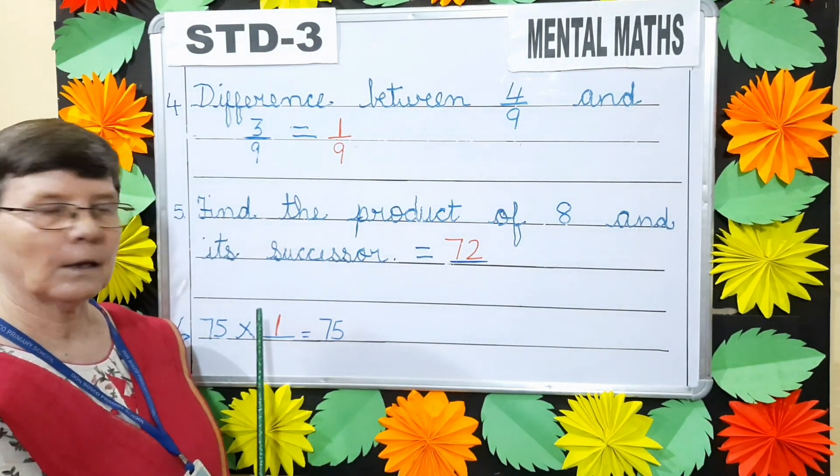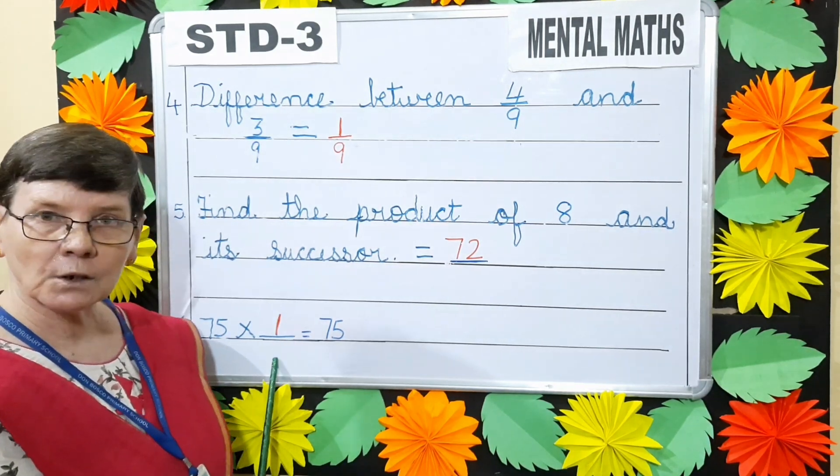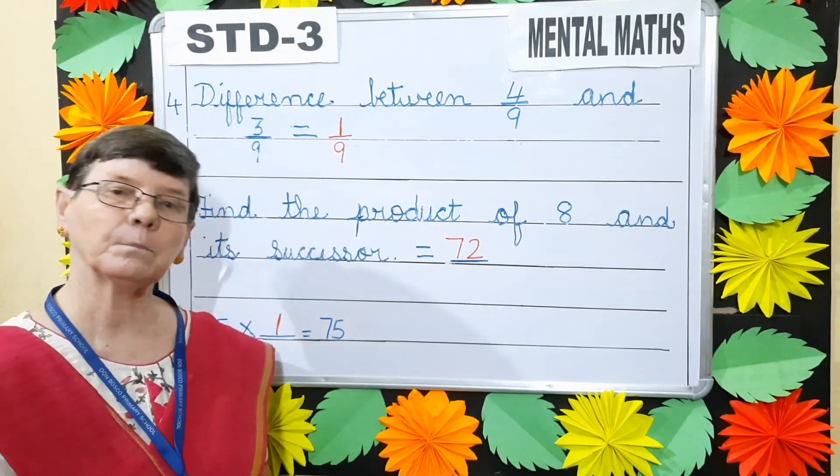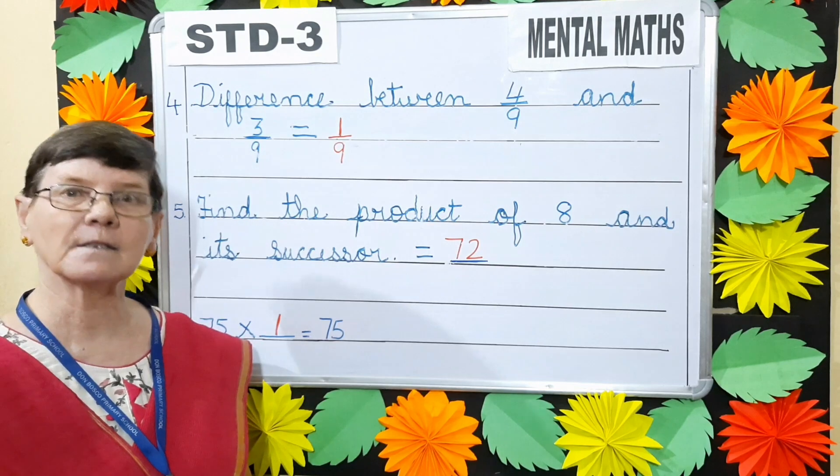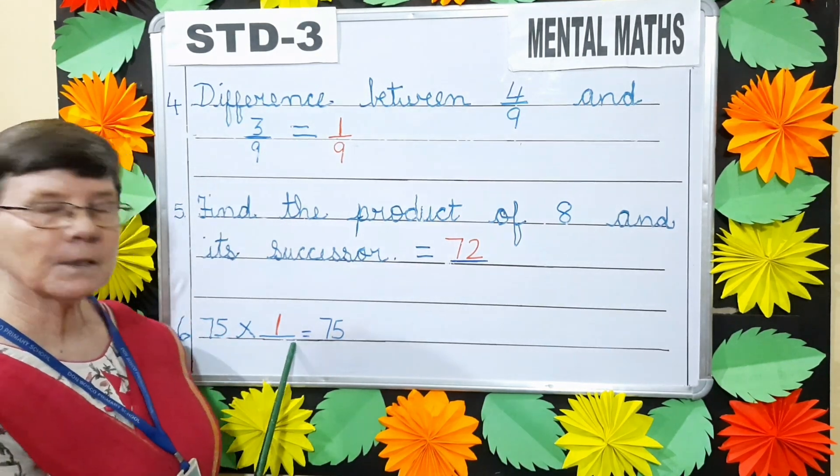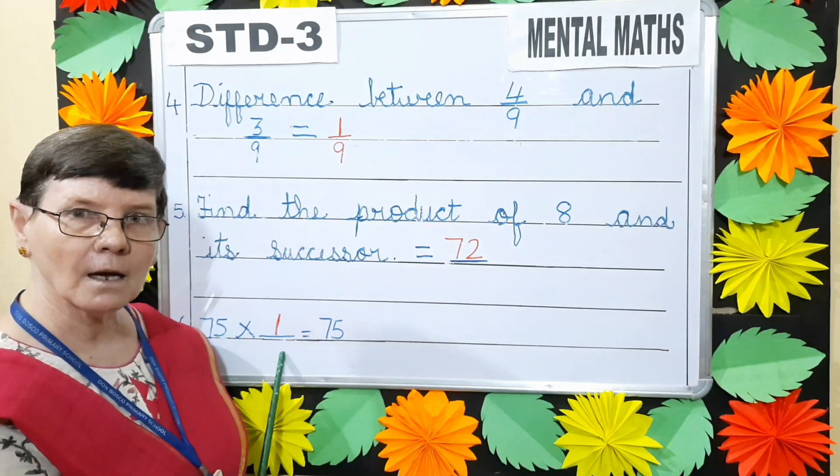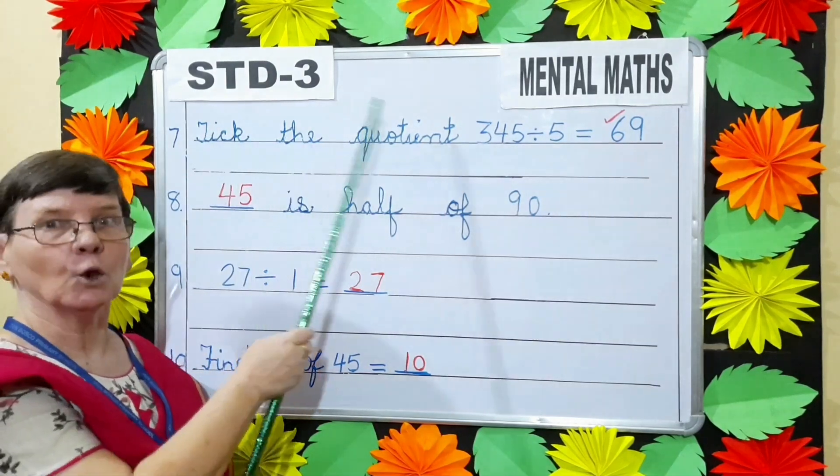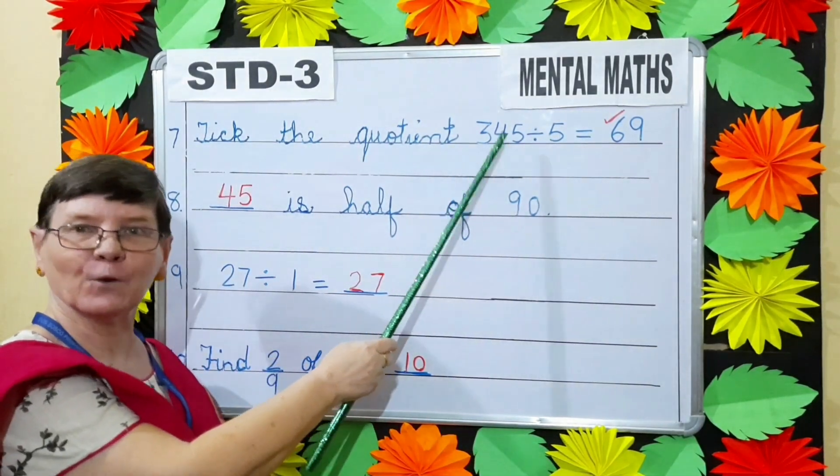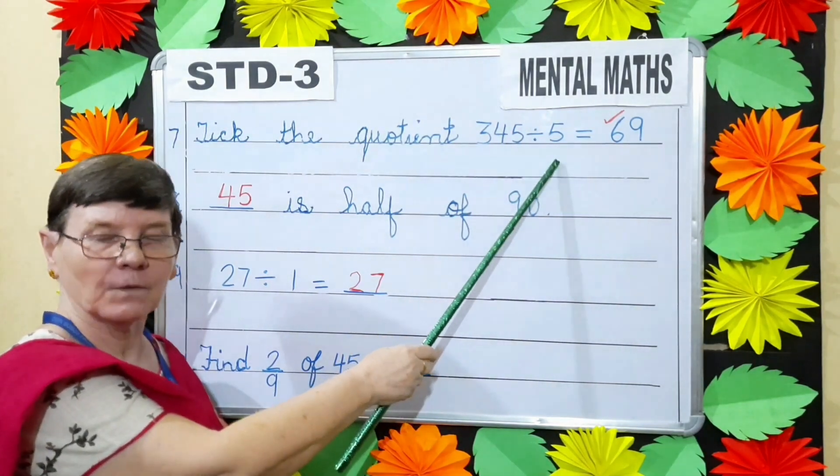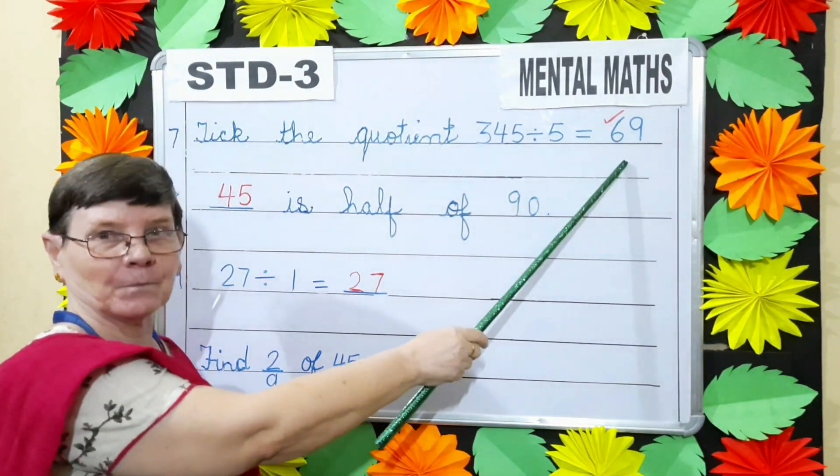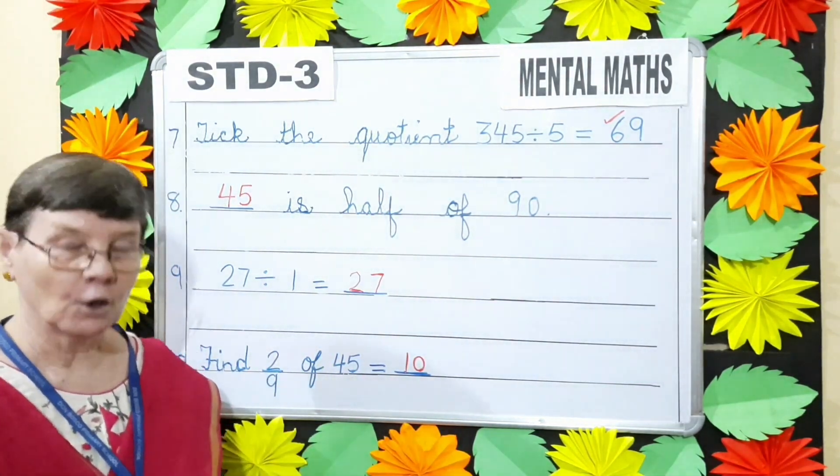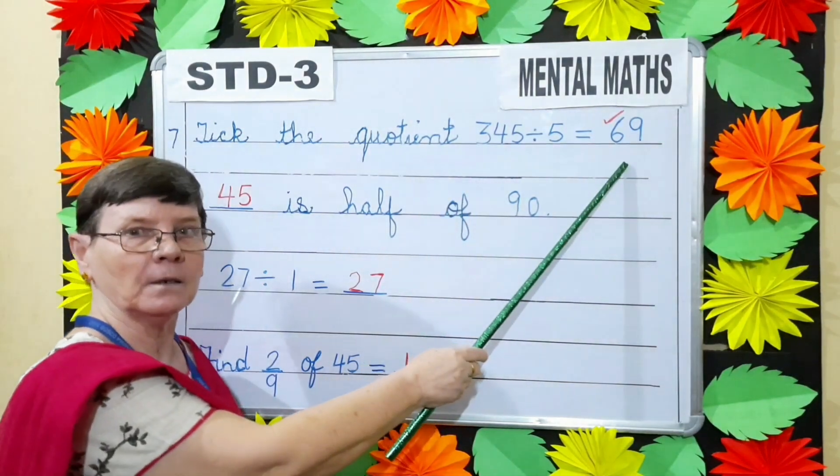Next, 75 into dash is equals to 75. Any number multiplied by 1 will give the number itself. So we will write 1. 75 1's are 75. Question number 7. Take the quotient. 345 divided by 5 is equals to 69. Quotient here means answer in division. So which is the quotient in this question children? 69.